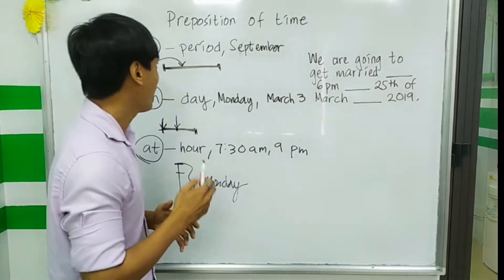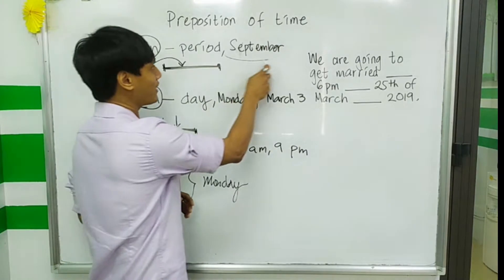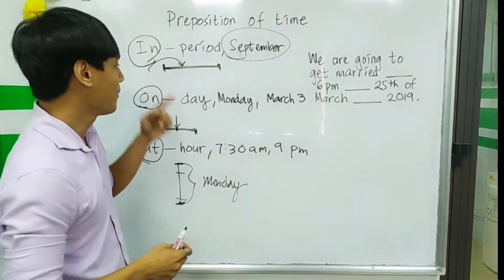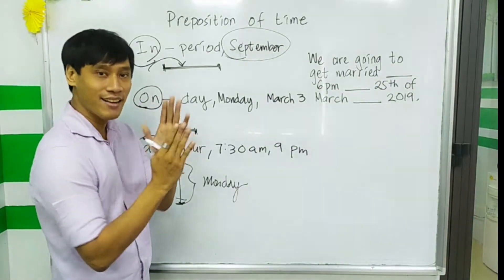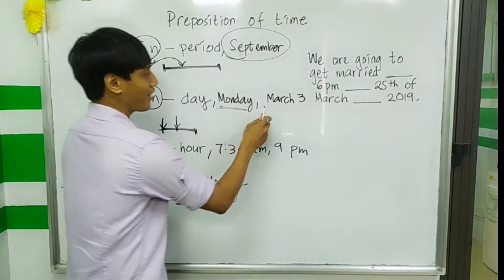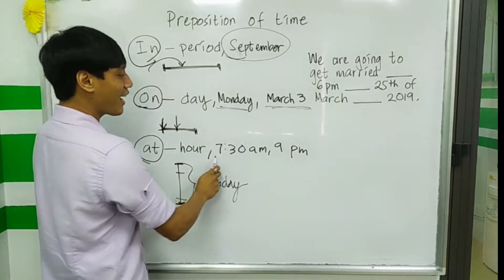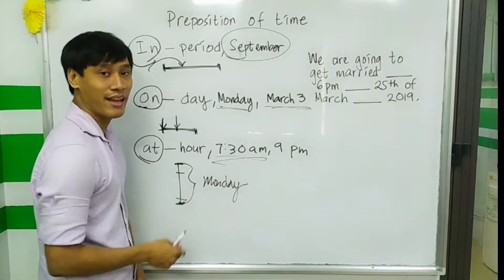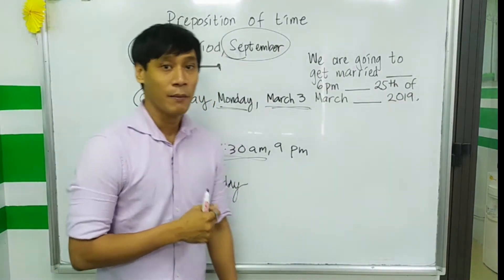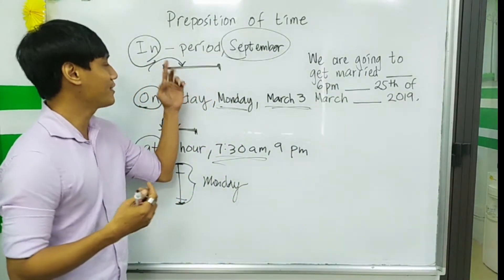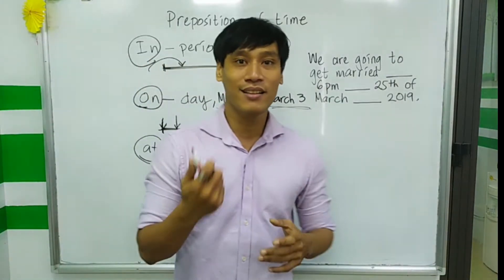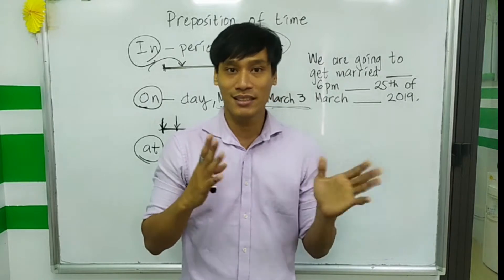So just to make it simple: if it's a period of time or a month, we use 'in'. If it's a day, we use 'on' — days and complete dates use 'on'. For time, we use 'at'. For parts of the day, we also use 'at' — like 'at night'. But don't forget: for morning and afternoon, we use 'in the morning' and 'in the afternoon' — that's kind of irregular.